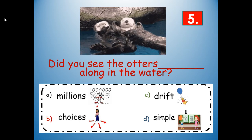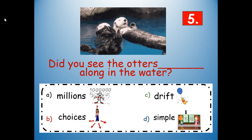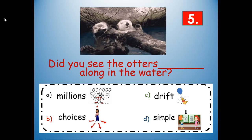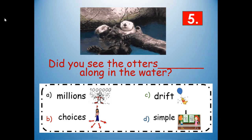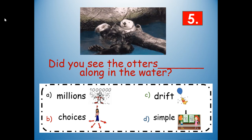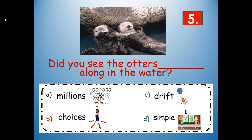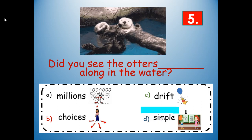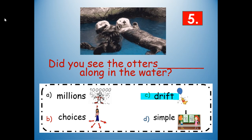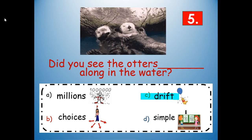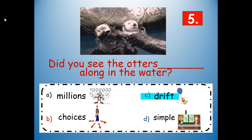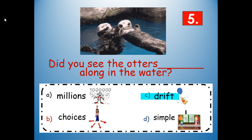Number five: did you see the otters blank along in the water? Would it be millions, choices, drift, or simple? What makes sense given the picture clues and where the word is in the sentence? Drift — D-R-I-F-T. Did you see the otters drift along in the water? They are drifting or floating in the water, and they're holding hands — isn't that sweet!